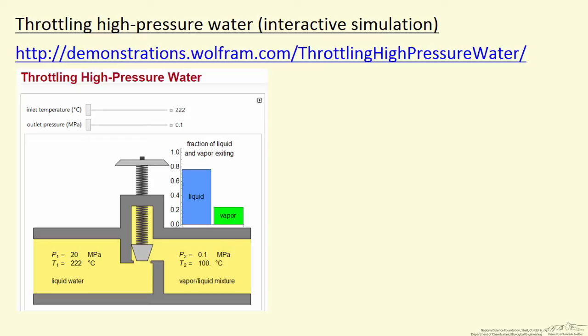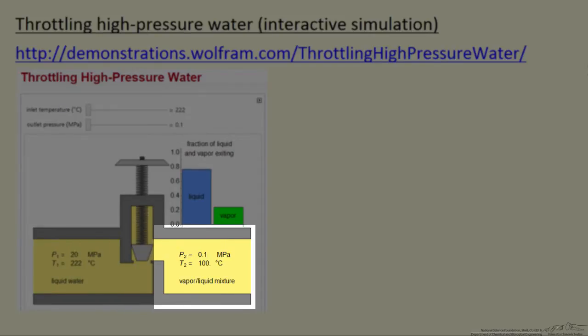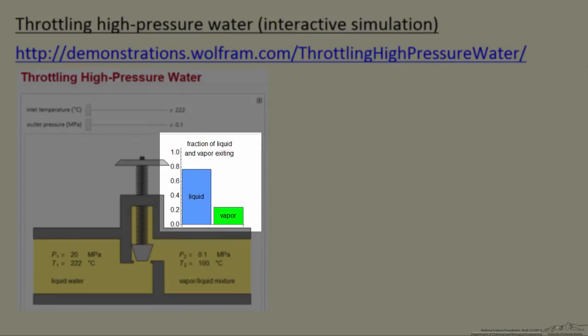What we represent on the left side is liquid water, and on the right side is that lower pressure where we have, in this case, a liquid vapor mixture. The bar graph represents the fraction of liquid and the fraction of vapor that's leaving the system.